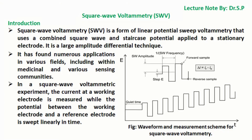SWV has found numerous applications in various fields, including within medicinal and various sensing communities. In a square wave voltammetric experiment, the current at a working electrode is measured while the potential between the working electrode and a reference electrode is swept linearly in time. The figure shown here illustrates the waveform and measurement scheme for square wave voltammetry.